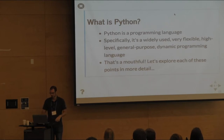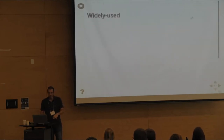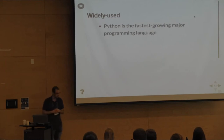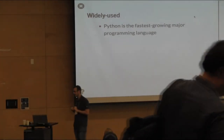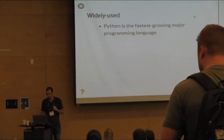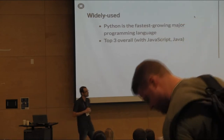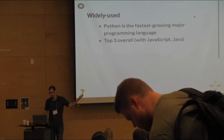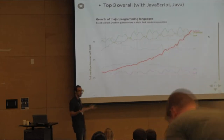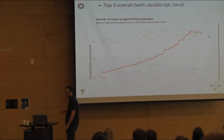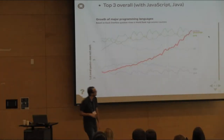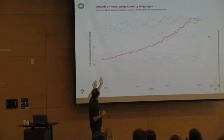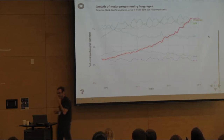Python is widely used. By almost any accounting, most indexes would say it's the fastest-growing major programming language and has been for a few years. It's probably in the top three overall languages along with JavaScript and Java. Here's one estimate from Stack Overflow based on what people are searching for — Python has just skyrocketed in popularity. It now has more searches than pretty much any other language.